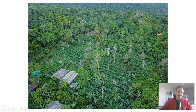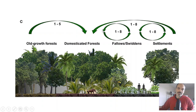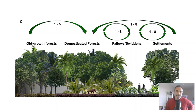This succession of old-growth forest with domesticated forest, openings, and settlements is something that Amazonian peoples have been doing for probably centuries. It's been rediscovered by Ernst Götsch but adapted with the knowledge we have now and contextualized to our diets and systems of production.